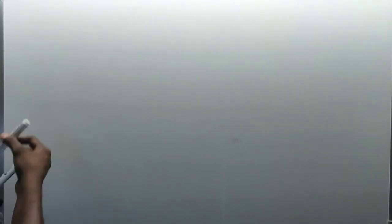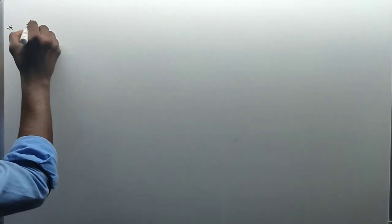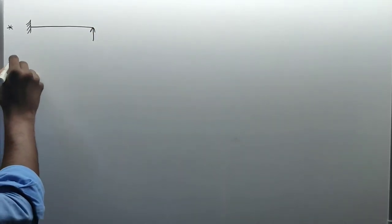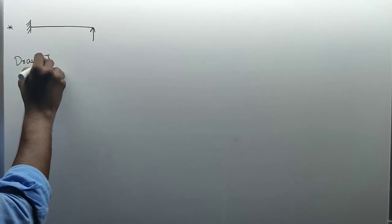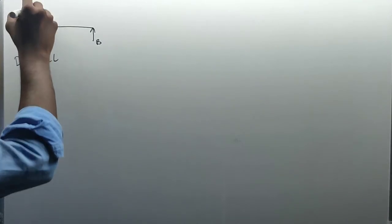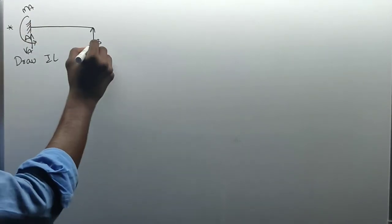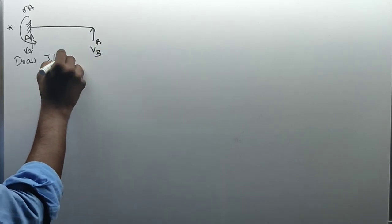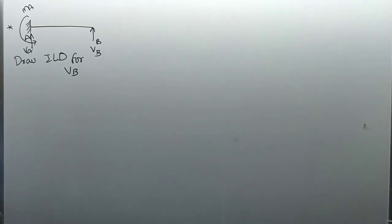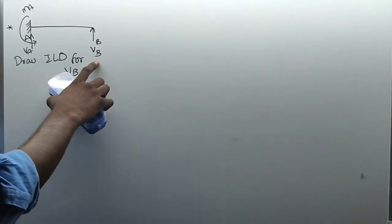ILD for indeterminate structures. I am taking the member that is a propped cantilever — propped at the end. The structure has a fixed support at A with moment MA and vertical force VA, and a roller support at B with reaction VB. The question is: draw ILD for VB.